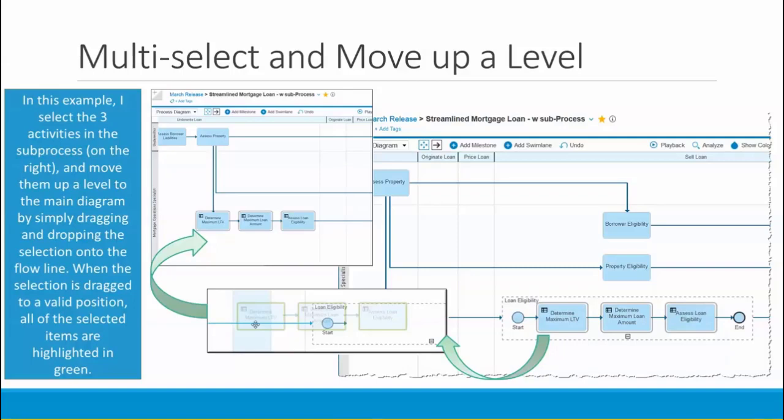Let's take a look at moving a multi-selection. In this example, I've selected the three activities in the sub-process on the bottom right and moved them up a level to the main diagram simply by dragging and dropping them onto the preceding flow line. As I drag the selection to a valid position, all of the selected items are highlighted in green. When I drop the selection onto the line, the sub-process disappears and those three activities have been moved up a level to the main diagram.